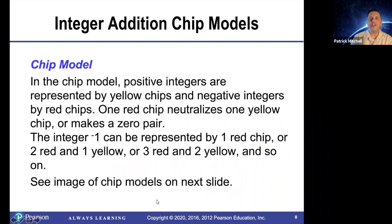Integer addition chip models. In the chip model, positive integers are represented by yellow chips and negative integers by red chips. One red chip neutralizes one yellow chip, or makes a zero pair. The integer negative 1, for example, can be represented by one red chip, or two red and one yellow because one red and one yellow would cancel each other out and leave one red. Or three red and two yellow, and so on.